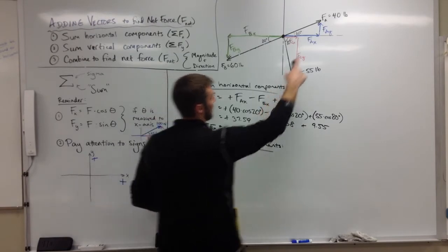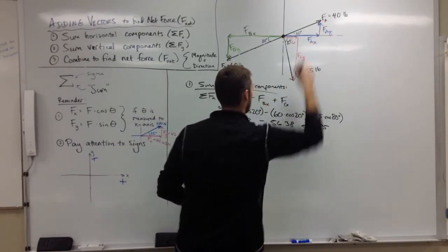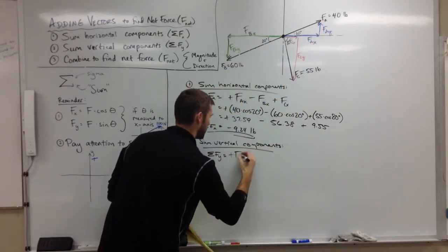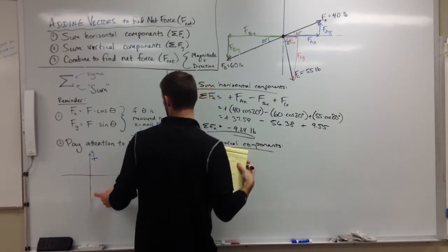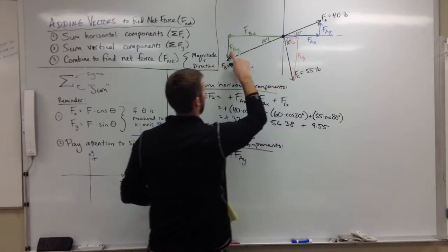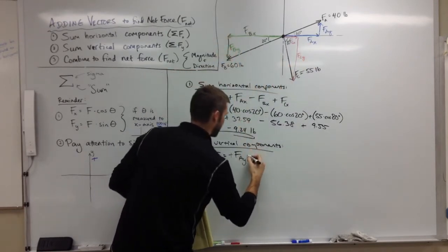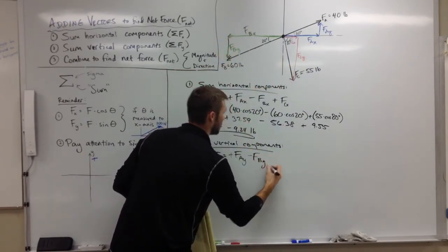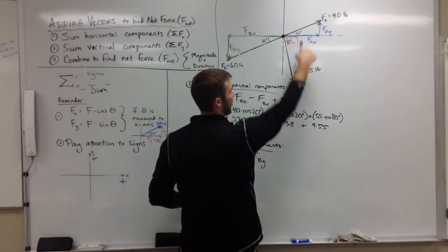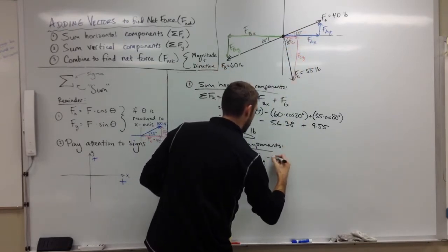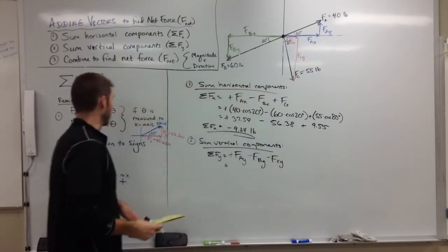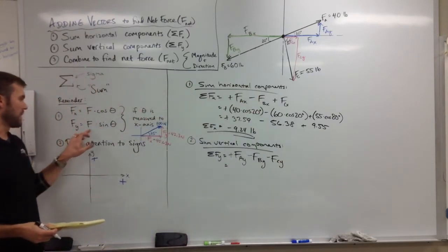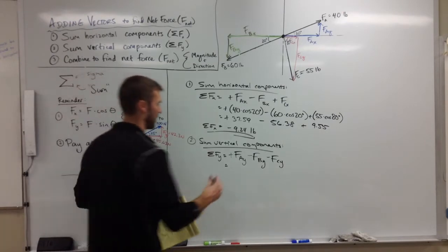Alright, here we go. Sum of the forces in the y direction. FA's y component is pointing upward so it's going to be a positive. FAy up is positive, down would be negative vertically. So it's positive. FBy is pointing downward so it's minus FBy. FC's y is pointing downward so it's going to be minus FC's y component. Alright, now using our shortcuts to find the y component, we do the magnitude of force times the sine of the angle.